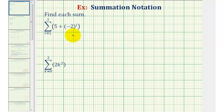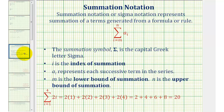We're asked to find each sum given using summation notation, also called sigma notation. Let's start with a review of this notation before we find these two sums. Summation notation, or sigma notation, represents the summation of terms generated from a formula or a rule.